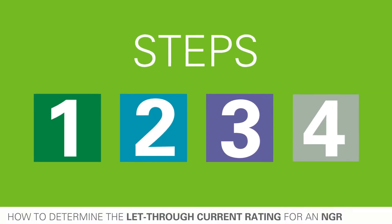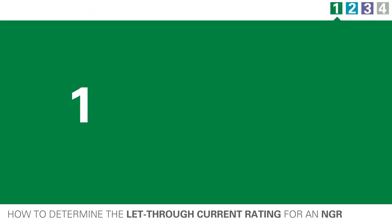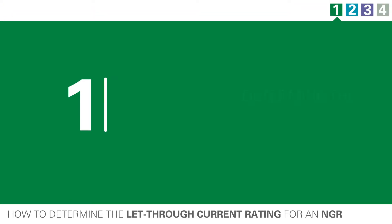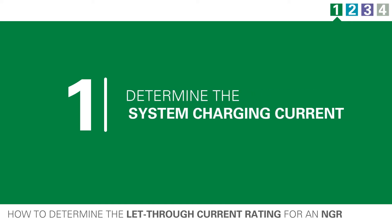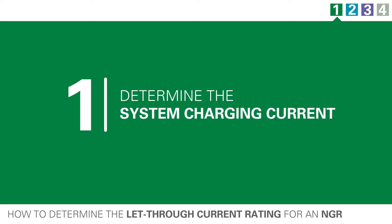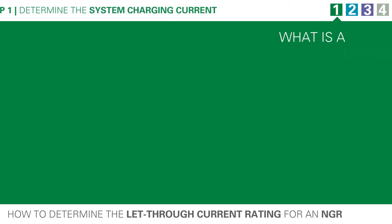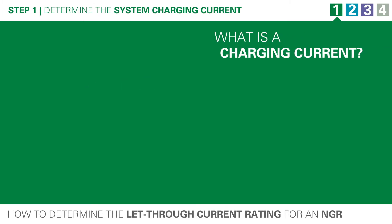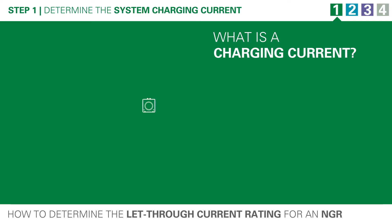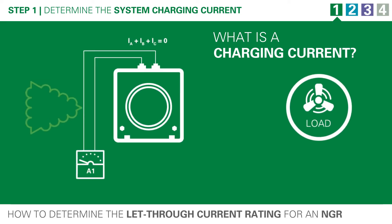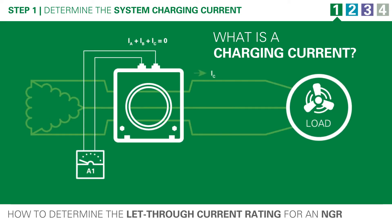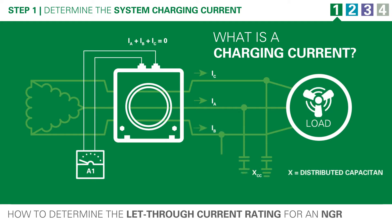We determine this in four steps. Step one: let's look at the system charging current. First, let's define charging current. An electrical system will have capacitance to ground, which is contributed to by cable length, surge arresters, motors, and other equipment.